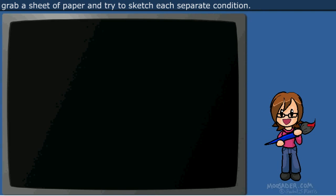If you're still having trouble understanding this method of collision, grab a sheet of paper and try to sketch each separate condition.